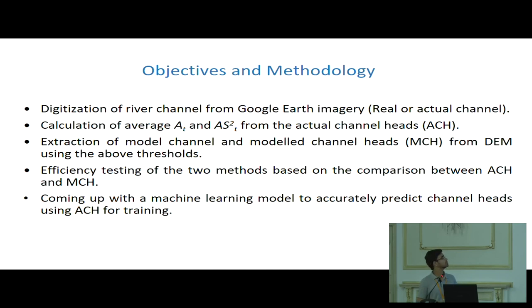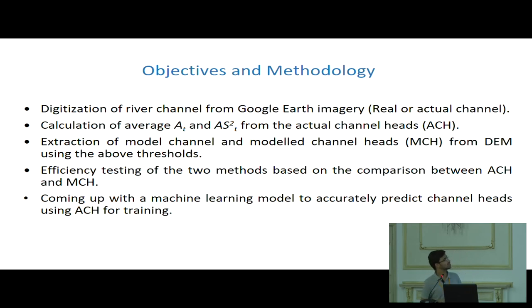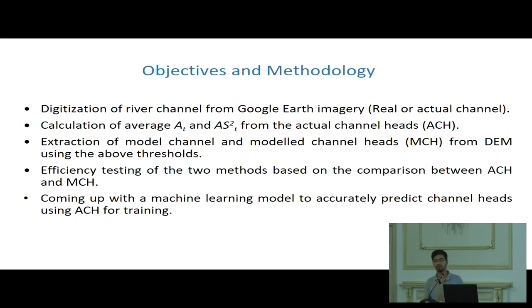Coming to the objectives: the first step is to select some sub-basins and to digitize those on Google Earth as the ground truth. The next step is calculating threshold values from these digitized values and extracting model channel heads using those thresholds. Then efficiency testing, and finally developing a machine learning model to increase accuracy and produce more realistic channel head locations.